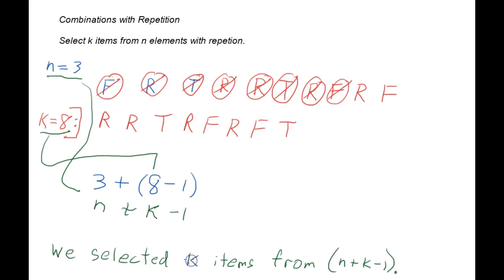Let me write that down to summarize this. We selected k items from the available n plus k minus one. And we saw that visually, so we can write that as n plus k minus one choose k. And that's how we would write this when we're selecting k items from n elements with repetition. I hope that helps.